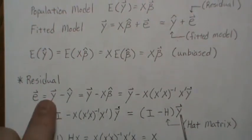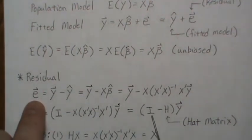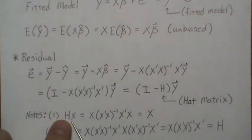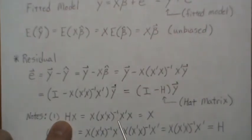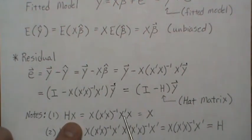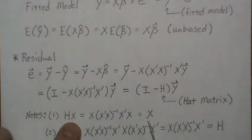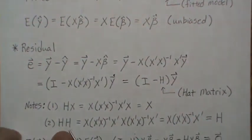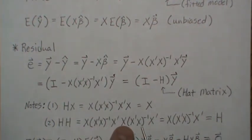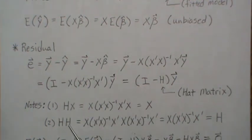A couple of notes: H times X — plugging in H, which is X times X transpose X inverse times X transpose, and then times X — we see X transpose X inverse times X transpose X is the identity, so H times X equals X. Also, H times H: substituting in, the X transpose X appears and we're left with just H again. So H is idempotent.